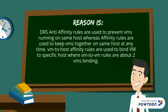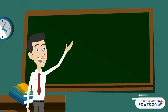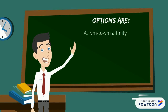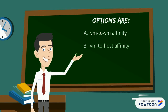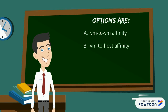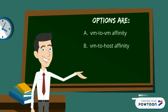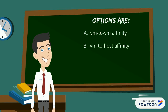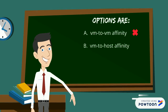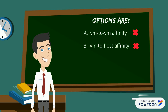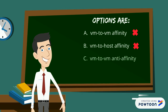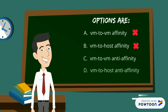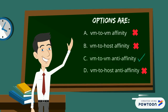VM to host affinity rules are used to bind VMs to a specific host, whereas VM to VM rules are more about binding VMs to each other. Since we are talking about preventing VMs from running on the same host, affinity cannot be the answer — so VM to VM affinity and VM to host affinity are wrong. Since we are talking about binding of VMs, the answer is VM to VM anti-affinity instead of VM to host anti-affinity.